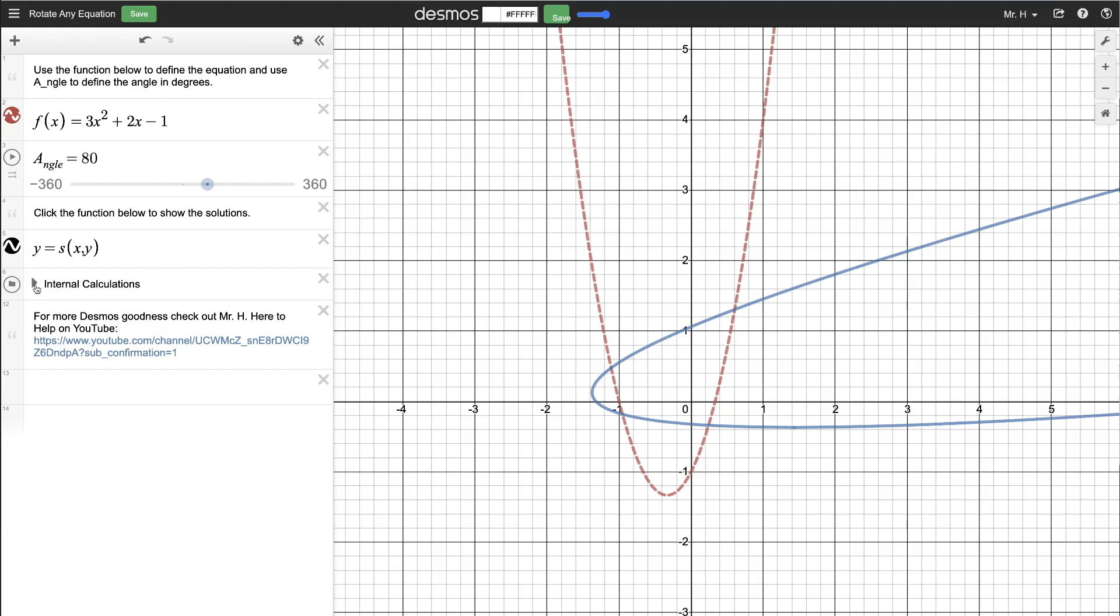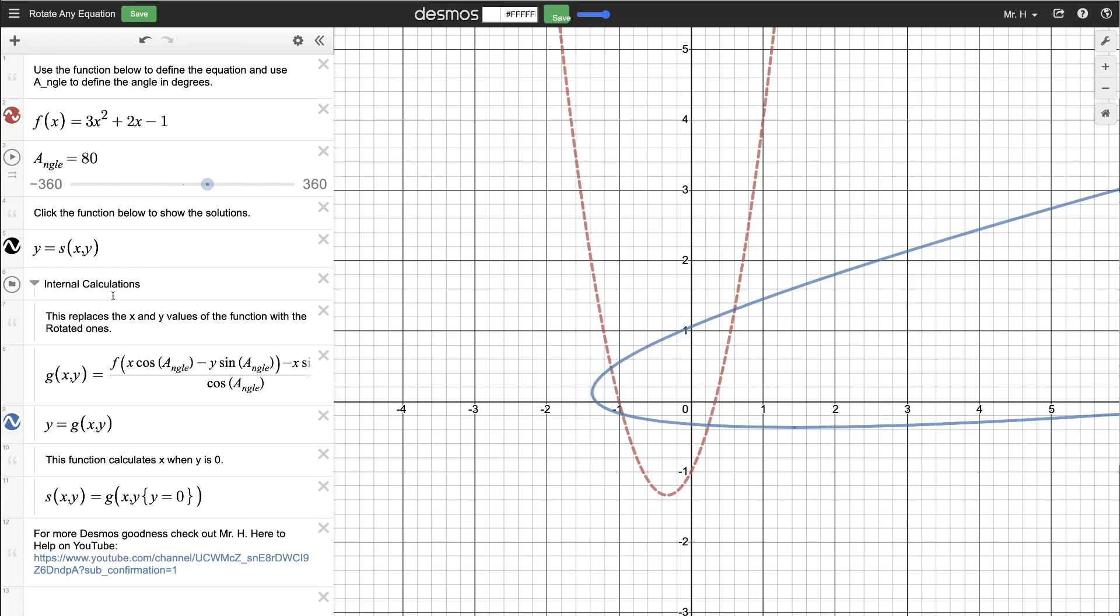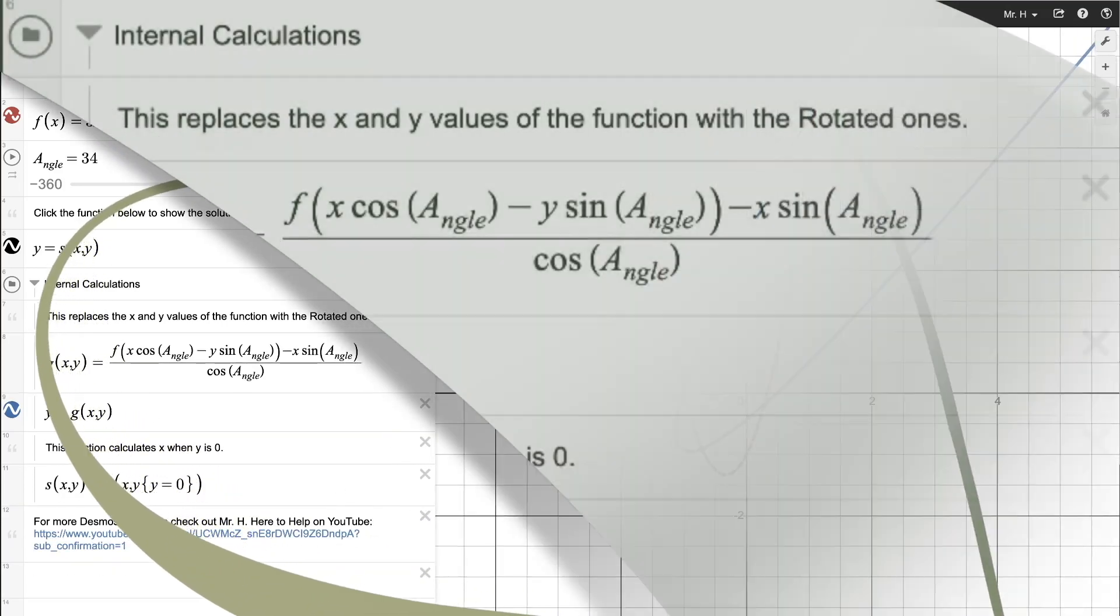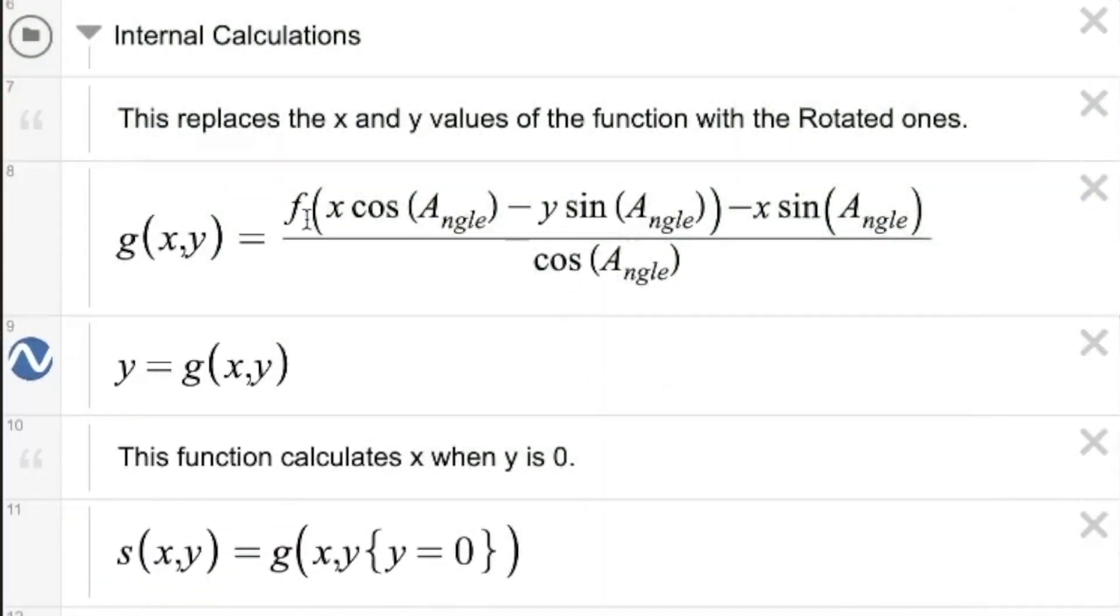Now let's look at the internal calculations. So the main thing happening here is that we say f of this, using the angle that's input in the slider up here, is going to calculate for us the new values of x and y, and the new function to build here. So we're graphing this new function g based on this formula. And this is just a standard formula for rotating points.